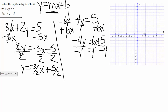Simplifying: negative 4 over negative 4 cancels, dropping down y is equal to — a positive divided by a negative is negative — and 6 fourths simplifies down to 3 halves. We have a 2 in common, so 6 divided by 2 gives us 3, and 4 divided by 2 gives us 2. For our constant, a positive divided by a negative is negative, and 5 divided by 4 is 5 fourths — that cannot be simplified.